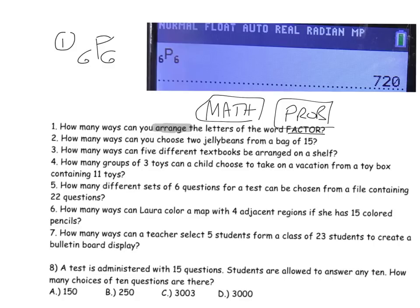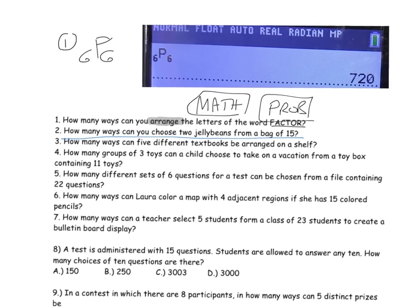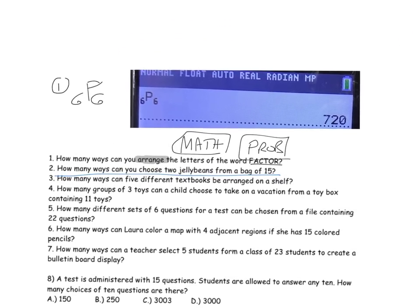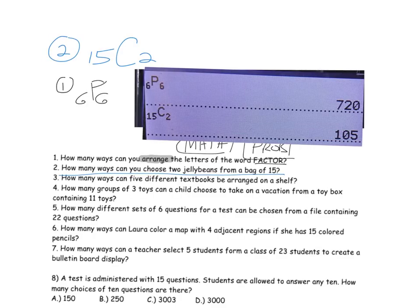Number two: how many ways can you choose two jelly beans from a bag of 15? This is an example of combinations where order doesn't matter. We have 15 jelly beans and we're choosing two. If you pick jelly bean 1 then jelly bean 2, that's the same as jelly bean 2 then jelly bean 1. So it's 15C2, or 105 ways.